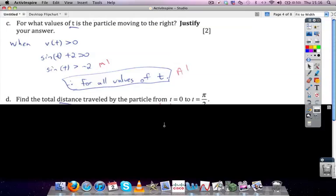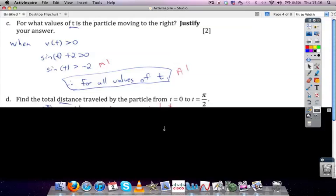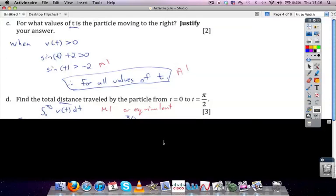Finally, in this question, we're asked to find the total distance traveled by the particle from time is 0 to pi over 2. So the distance traveled can be found by taking the definite integral from 0 to pi over 2 of the velocity.